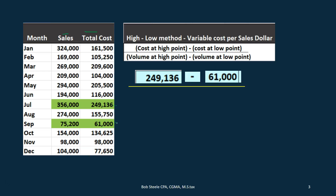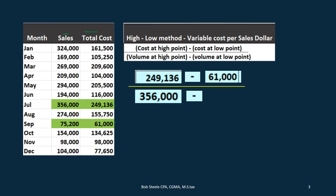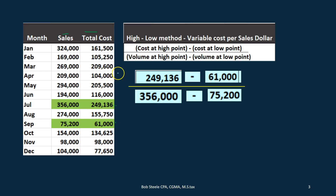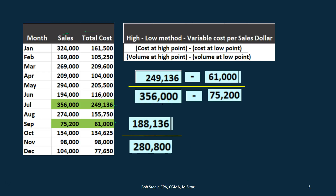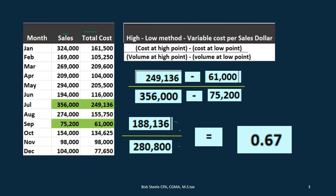We divide by the volume at the high point — in sales dollars, that's $356,000 — minus the volume at the low point, which is $75,200. Doing the subtraction: the numerator is $249,136 minus $61,000 equals $188,136, and the denominator is $356,000 minus $75,200 equals $280,800. Dividing these gives us $0.67, which is our variable cost per sales dollar.